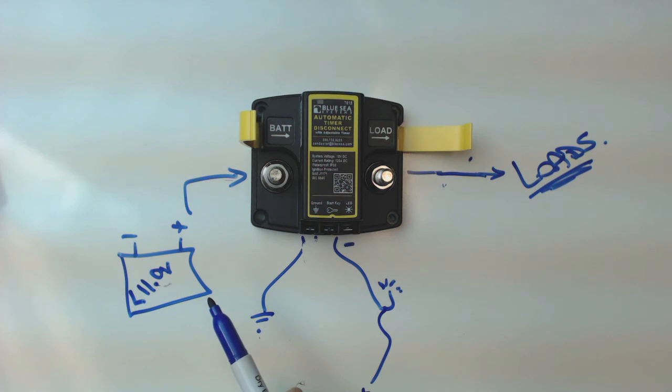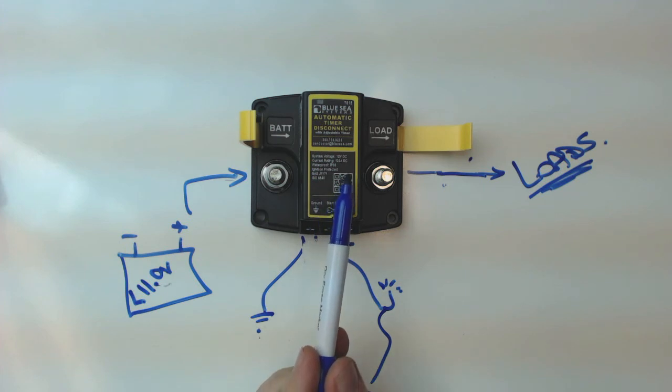So the other thing is the Blue Sea timer will do 120 amp continuous. So that is a large capacity timer. Most timers will be 20 to 30 amps. And on some vehicles, that means you have to wire in an external relay because you're drawing 40, 50, 60 amps off the vehicle. So these timers will do 120 amps continuous.